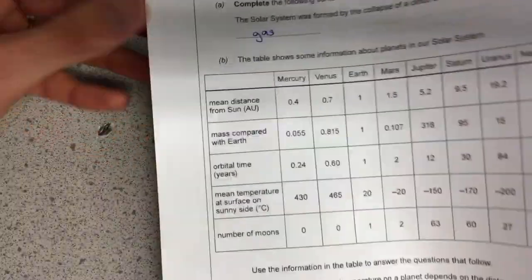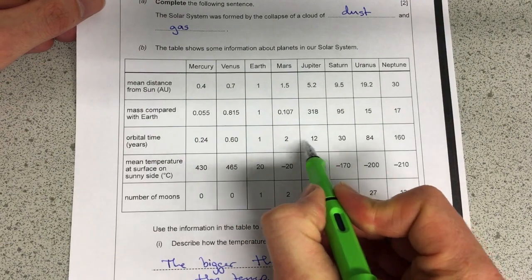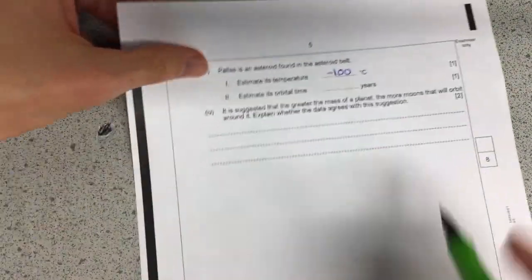Estimate the orbital time. So again I'm doing the same as I did before. So the orbital time is 2 and 12. So anywhere in between there. So let's go for 7.